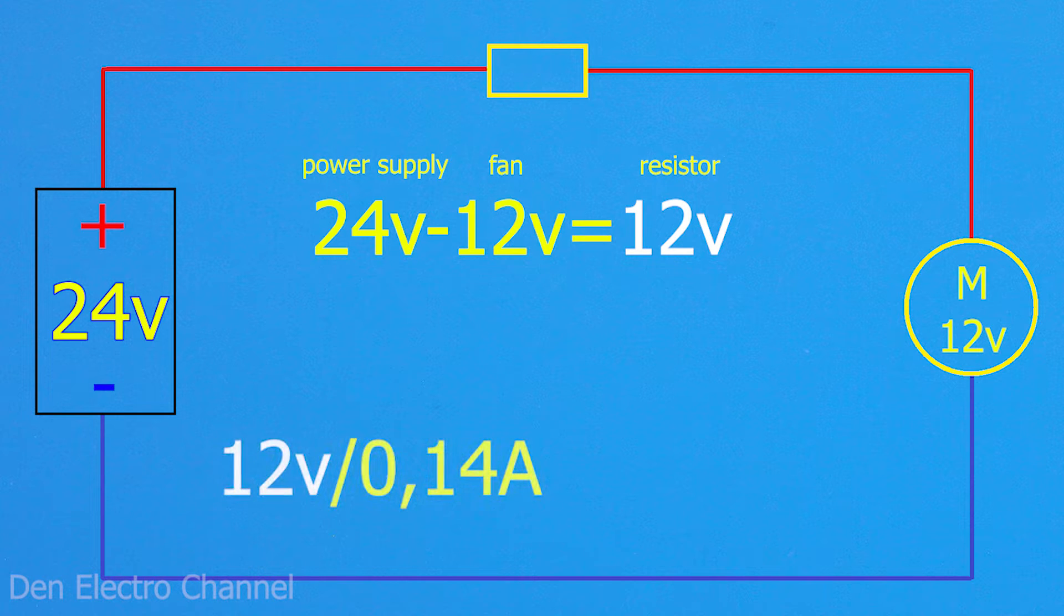We divide the resulting voltage by the current consumed by the fan. Only the current from milliamps must be converted to amperes. It turned out to be 85.7 ohms. This will be the resistance of the resistor.